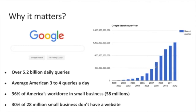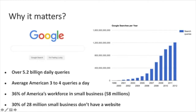First, I want to touch on why it matters. To the right you can see the number of times people have been using Google every year. Today, the estimated daily number of Google queries is 5.2 billion times — that's almost 60% of the world's population. On average, every human being is searching 15 times a month, and every American is doing three to four queries a day.